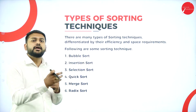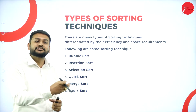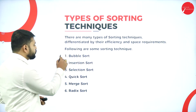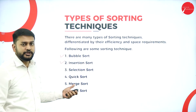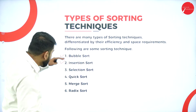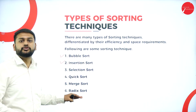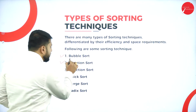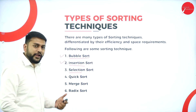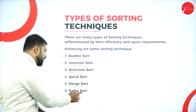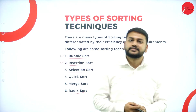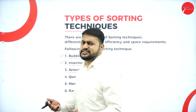In this class I will be discussing the first two basic types of sorting. We have six different types of sorting: bubble sort, insertion sort, selection sort, quick sort, merge sort, and radix sort. We'll be discussing all of these across our sessions.